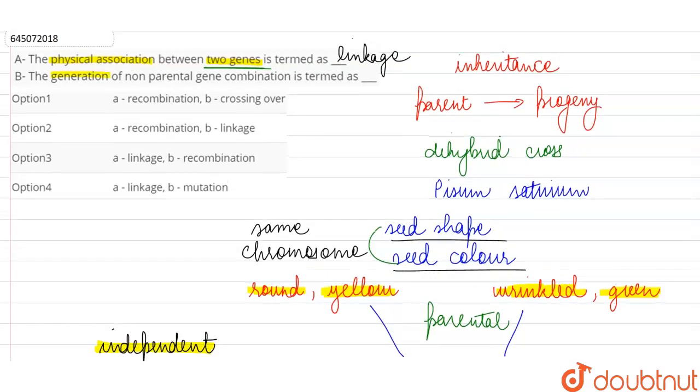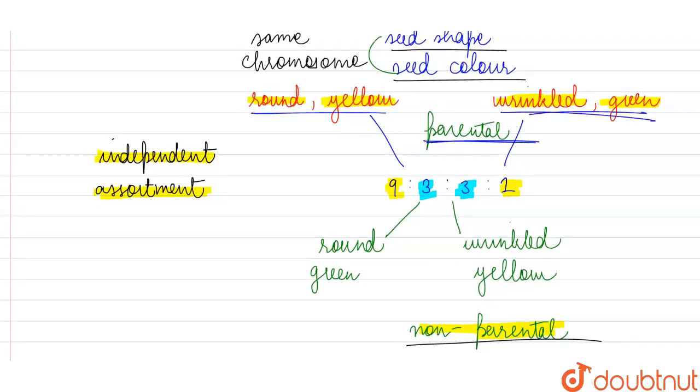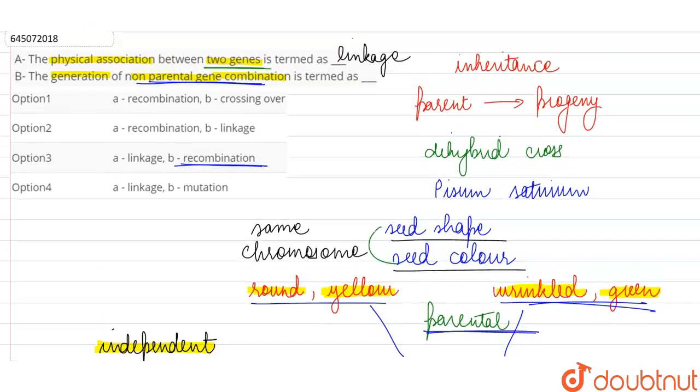Next, they are saying generation of non-parental gene combination is termed as. Because of linkage, the frequency of these non-parental gene combinations or these recombinations reduces. And we are mainly just able to see the parental gene combinations, the characteristics which were appearing in the parents, in the progeny also.